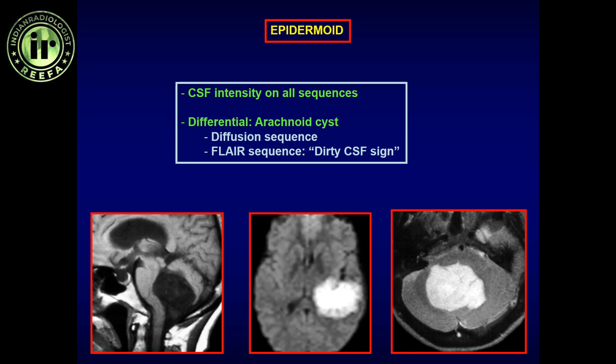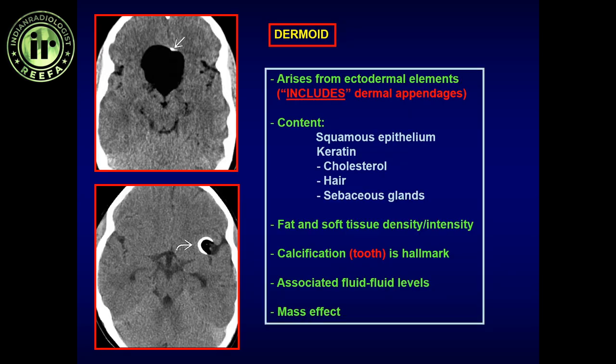Even post-resection, when the neoplasm has been decompressed or excised, the main sequence used to look for recurrent or residual epidermoid is the diffusion sequence. Moving on to the second form — the dermoid tumor. Both epidermoid and dermoid are strictly ectodermal in nature. The difference is that epidermoid is entirely from squamous cell epithelium, whereas dermoid has both squamous cell epithelium and dermal appendages.